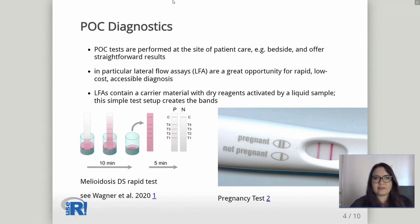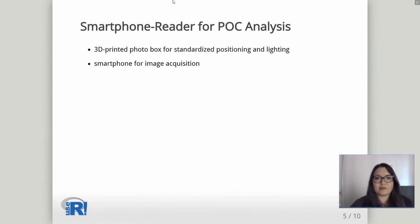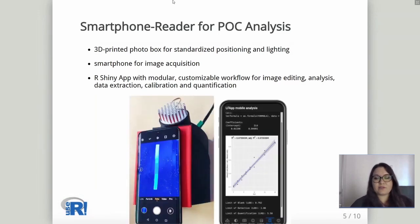How do we analyze these assays? With our smartphone reader. Our smartphone reader system consists of a 3D printed photo box for standardized positioning and lighting of the assays, a smartphone for image acquisition, and our R Shiny app with a modular customizable workflow for image editing, analysis, data extraction, calibration, and quantification. On the left we have the 3D printed photo box with the smartphone on top, photographing from above. On the right is our smartphone with the LFA app in mobile version.